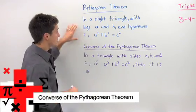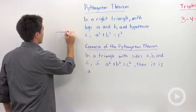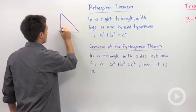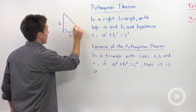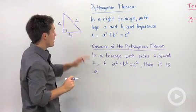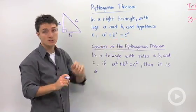The Pythagorean Theorem says that if you have a right triangle with legs A and B and hypotenuse C, then A squared plus B squared must equal C squared.